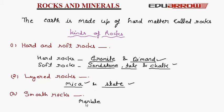Smooth rocks — marble is a smooth rock. Marble is available in many colors like white, grey, black, green, pink, etc. It is used for making statues and buildings. The Taj Mahal is built of marble. White marble is very smooth and shiny.